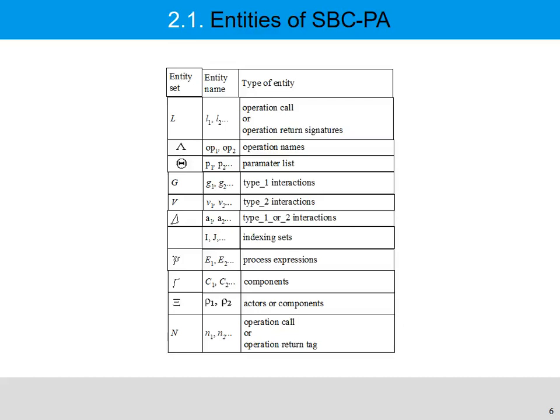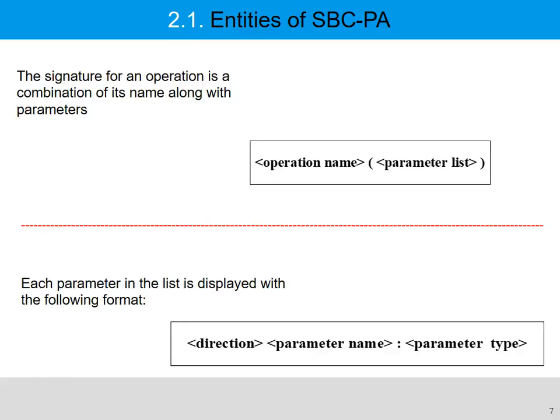SBC process algebra is a language, therefore we have many entities in it. For example, like operational call or operational return signature, we use entity name L1, L2. Also we have operational name, parameter list, and such entities. The signature of an operation is a combination of its name along with its parameters.